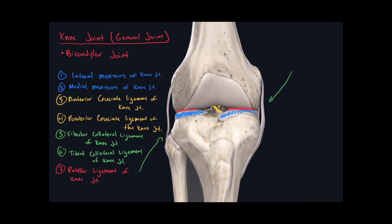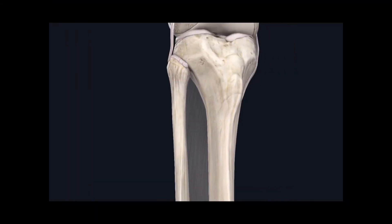Now we can work our way more inferiorly. The next joint to identify is where the tibia and the fibula are united together. This union is called the tibial fibular joint, and its classification is a planar joint. Unlike the radius and ulna, which have both a proximal and a distal radioulnar joint, there is only one tibial fibular joint between these two bones — there is no distal tibial fibular synovial joint.